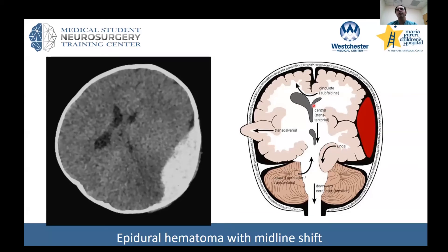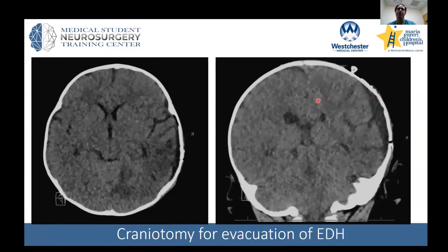Part of the temporal lobe called the uncus is getting pushed over. The ventricle on one side is effaced — being compressed. The cingulate is also being pushed over, and sub-falcine refers to below the falx, which is simply the dural separation between the right and left sides. As a neurosurgeon, the goal is to relieve that pressure, so this patient was taken to the operating room, an incision was made over the hemorrhage, the bone was removed, and the blood was evacuated with any bleeding points coagulated.